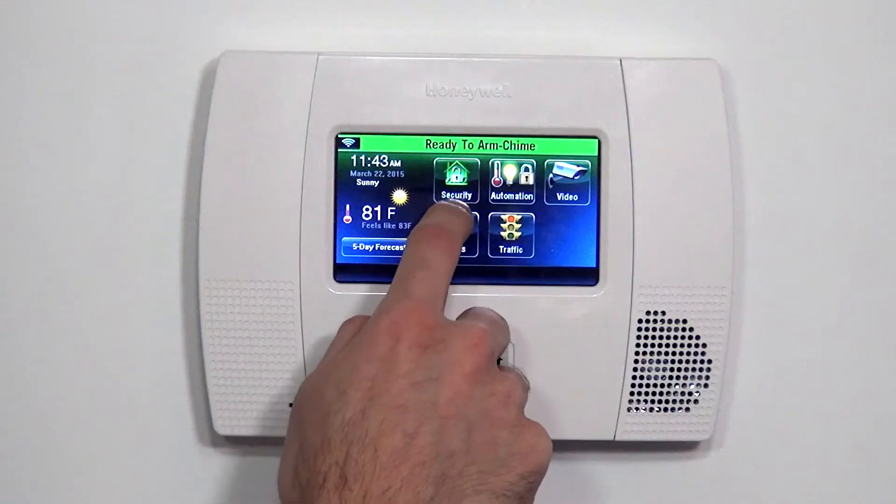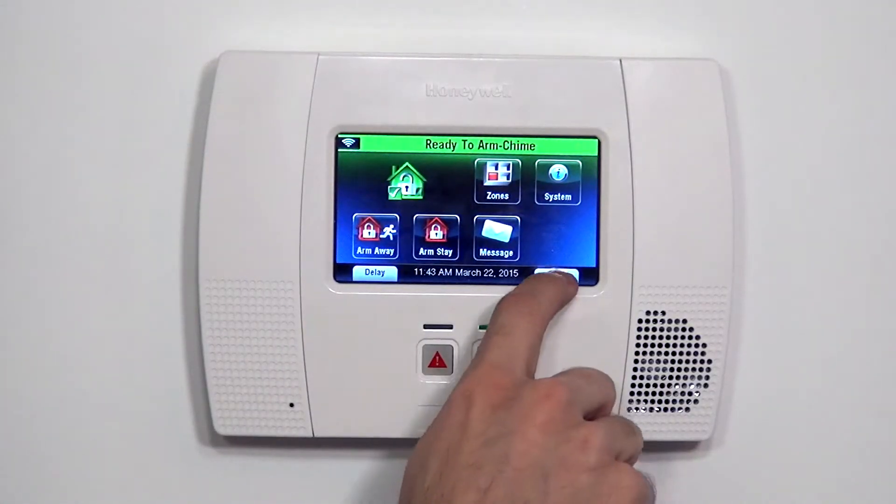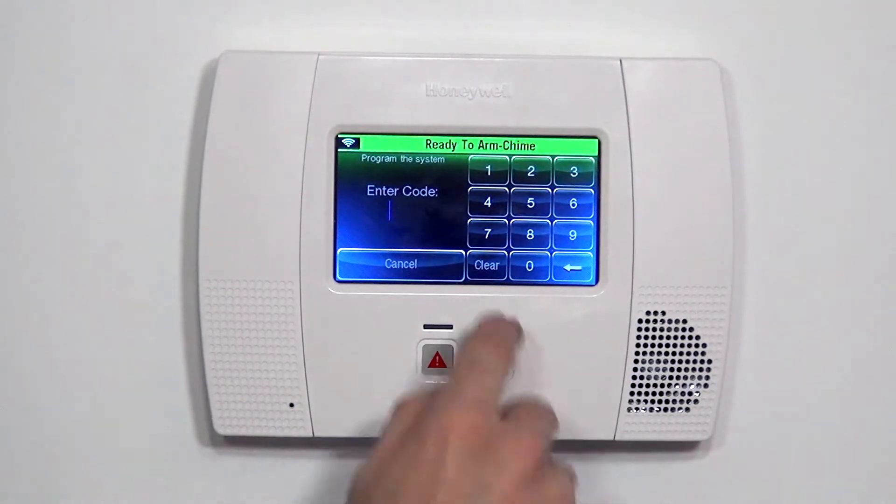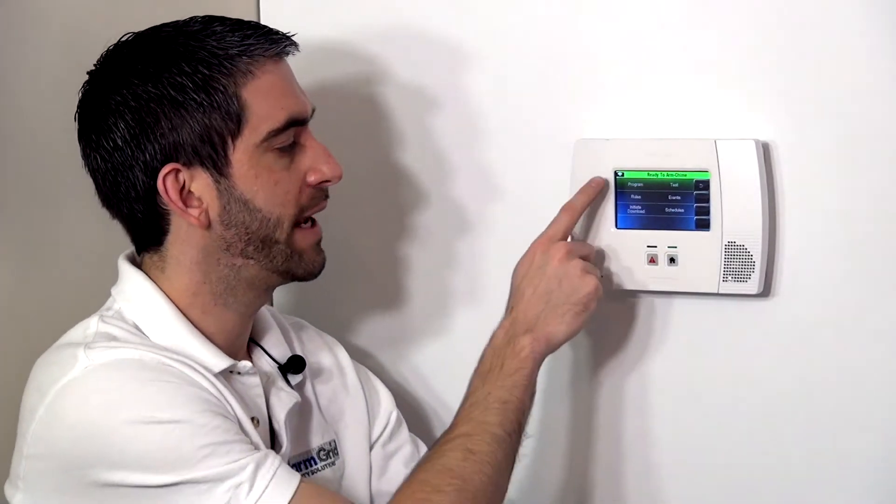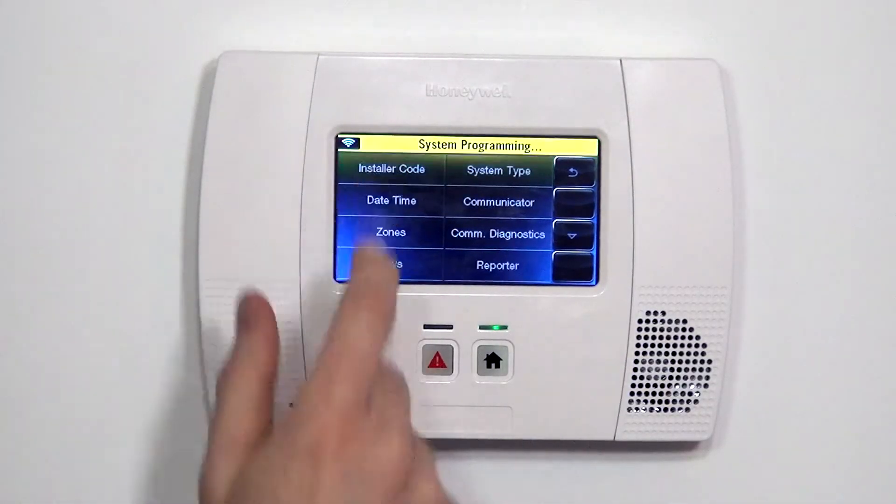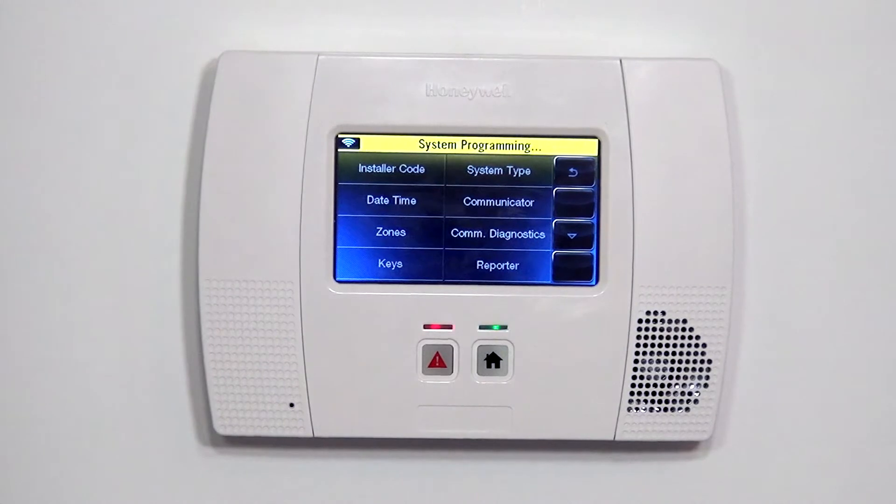Now to program it to our Lynx Touch L5200 system, it's very simple. We go to Security, and then More, and Tools. From Tools, 4112, which is the default installer code, gets us to this screen where we can enter programming mode. Once we're at programming mode, instead of using the zones programming, which you may be used to for your doors and your windows.